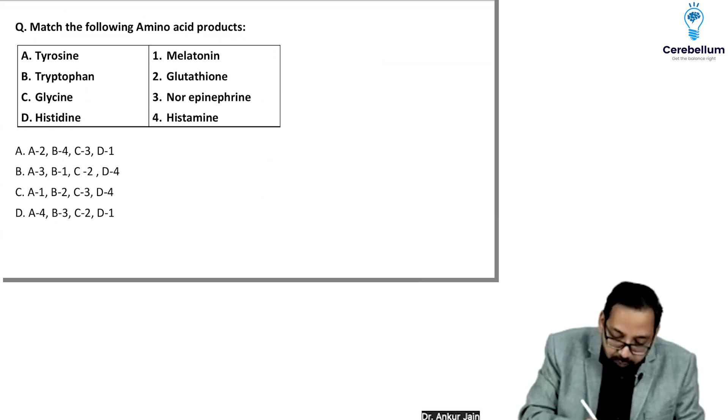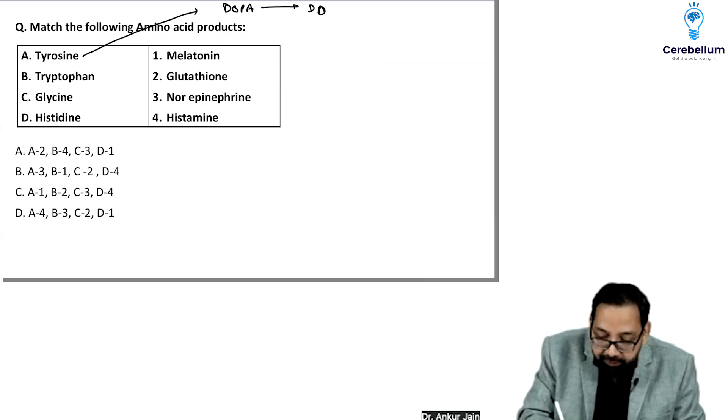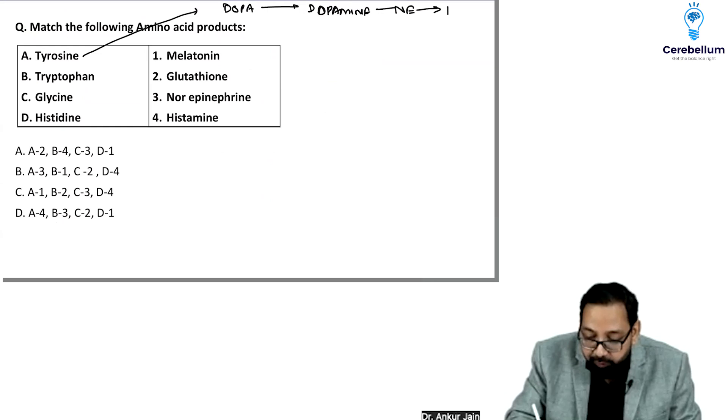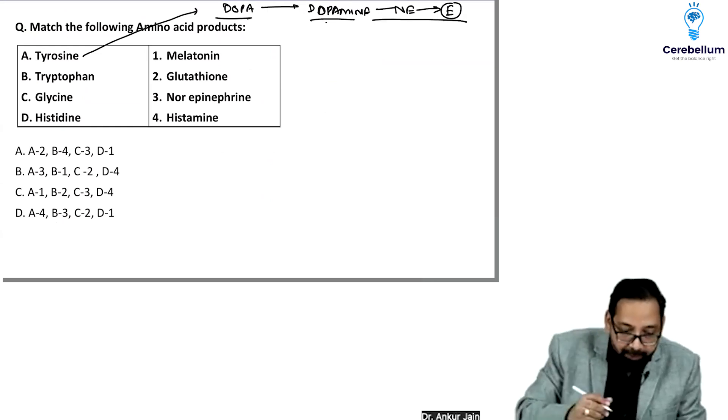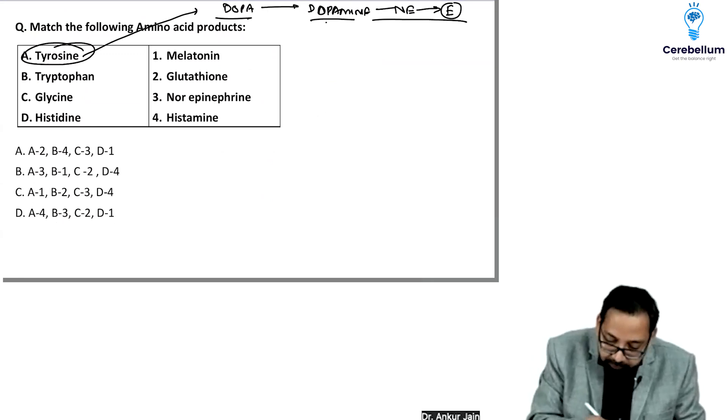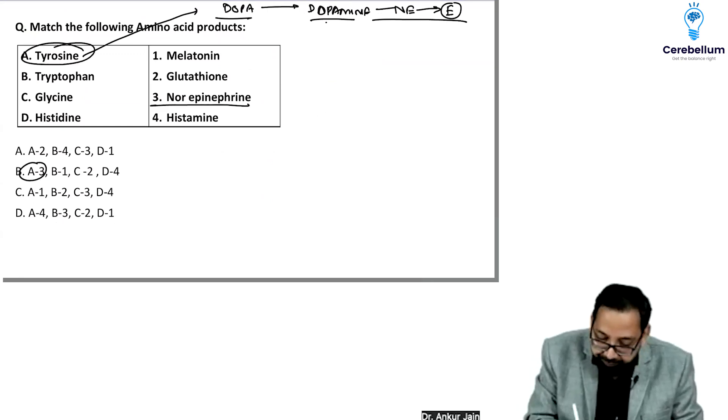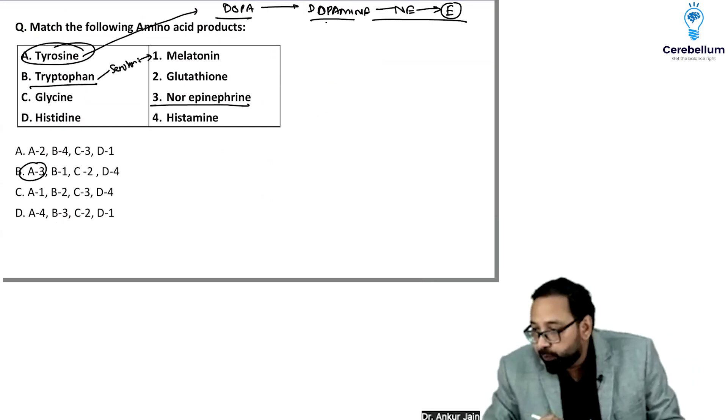Simple question: tyrosine is normally converted to dopa, dopa to dopamine, dopamine to norepinephrine, norepinephrine to epinephrine. These are catecholamines. Tryptophan is converted to serotonin, serotonin to melatonin.